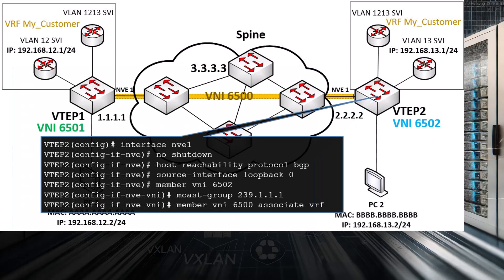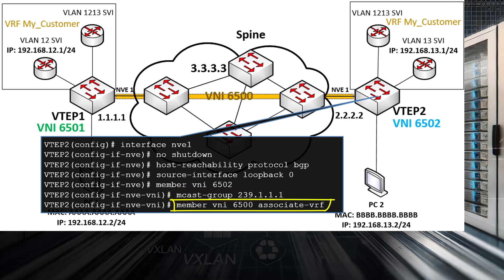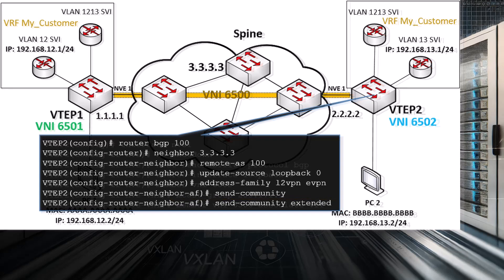Next, we configure the NVE interface on VTEP2. As before, we configure BGP as the protocol to share MAC addresses and configure member VNI 6502. Under that configuration, we use the 239.1.1.1 multicast group and specify VNI 6500 as a member VNI in the associated VRF to enable routing via the transit VNI. We then configure our IBGP peering with the spine switch, configuring our L2VPN eVPN address family and BGP extended communities.